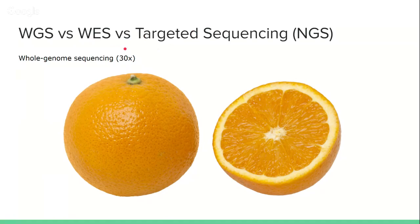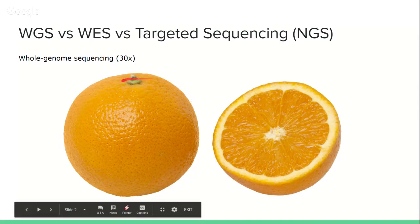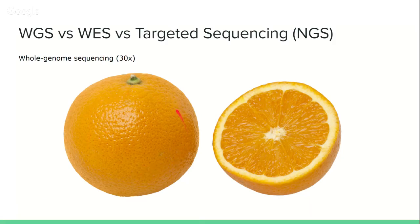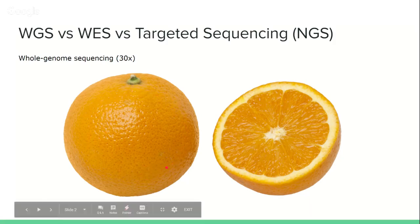Here's an analogy: whole genome sequencing of a human genome at 30x coverage would be the size of an orange. That's the volume of sequencing we're doing. So if your machine can process 16 or 24 oranges in one go and extract the juice inside, that's how much sequencing you're doing.